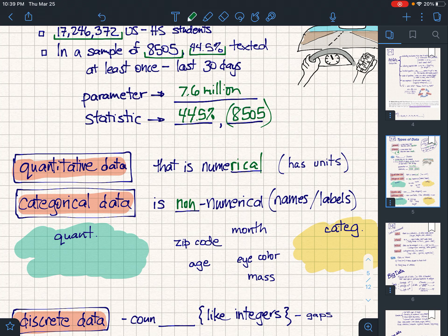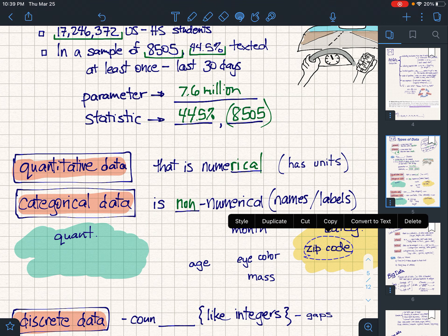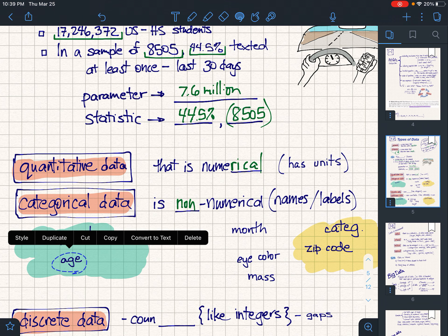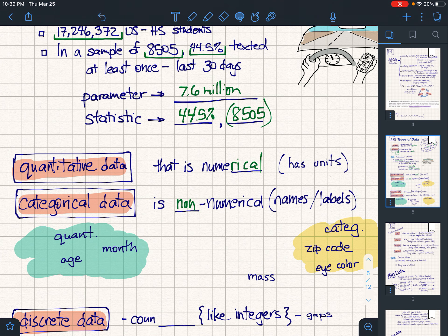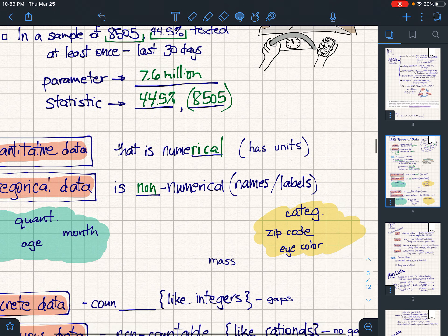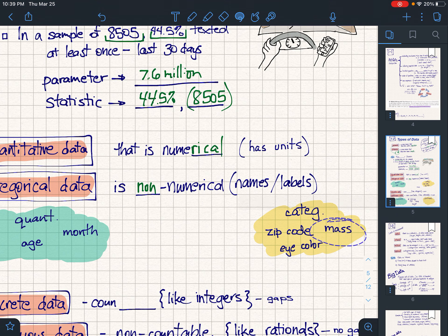Example: zip code looks like quantitative because it's a number, but be careful. We can't add or subtract it, it doesn't have units, therefore it's a category, it's categorical data. Age is quantitative. Month could actually go either way. Most of the time I'm going to guess if you're comparing from this date to that date then it's a number, but if they say how many people were born in a particular month, that's a category. Mass is quantitative.